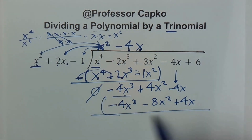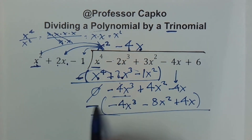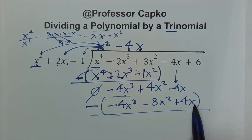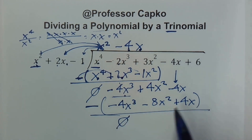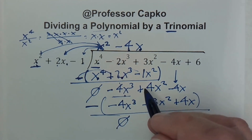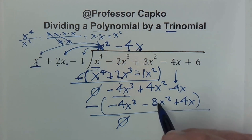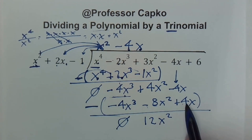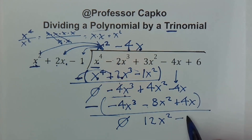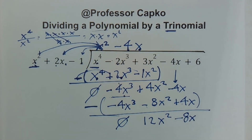Draw a line, put parentheses, and put the negative out here — remember I'm changing the sign of each term. Negative 4x³ becomes positive 4x³, and negative 4x³ plus positive 4x³ is zero. Then 4x² with the sign changed to plus 8x² gives 4x² plus 8x² equals 12x². Then the sign on 4x changes to negative 4x, and negative 4x minus 4x is negative 8x.